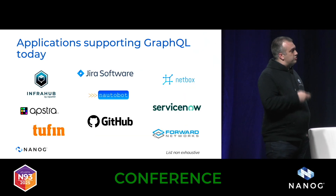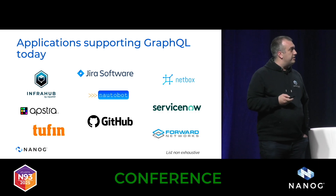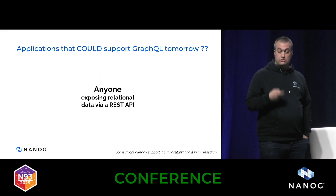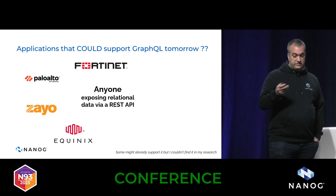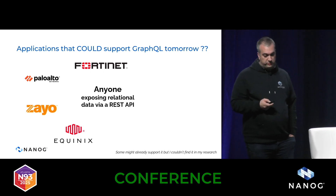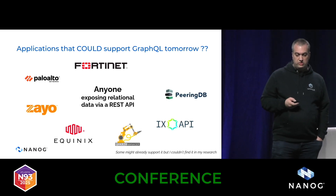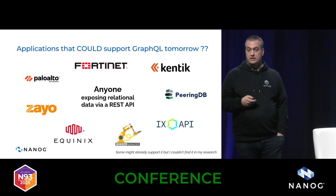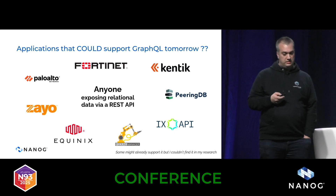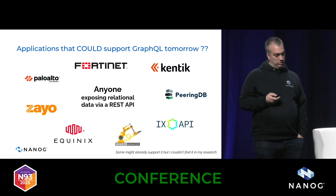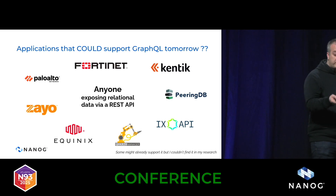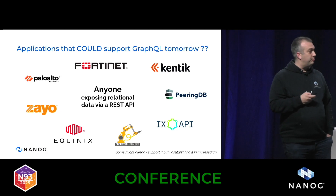There are a lot of applications that already support GraphQL today, and there's a good chance many more still don't. But anything that exposes data via a REST API today — whether it's vendors, providers, or players in the peering and AI space — is technically likely at some point to have a GraphQL interface. So always be on the lookout for it.